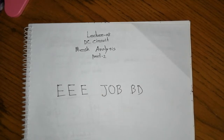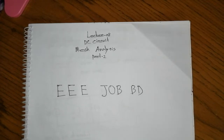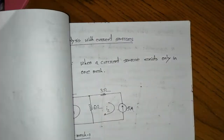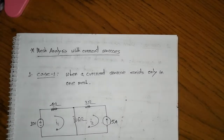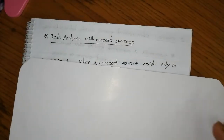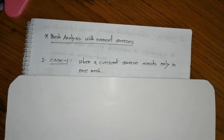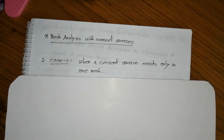This is the current source. This is called Mesh Analysis with current source. Here we go to Case 1, when the current source exists only in one mesh.